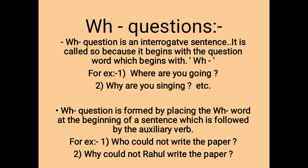For example, 'how' is used to know the manner of an action, 'when' examines time, and 'where' investigates the location of the action. A WH question is formed by placing the WH word at the beginning of a sentence, followed by the auxiliary verb. For example, 'Who could not write the paper?' or 'Why could not Rahul write the paper?'